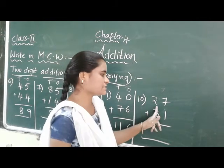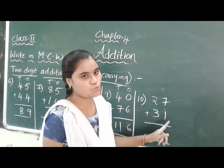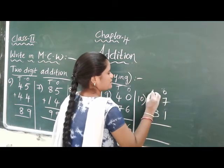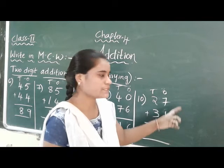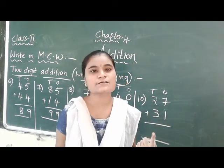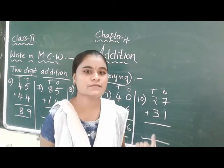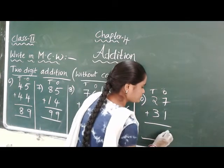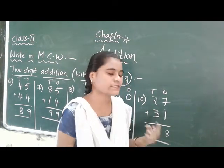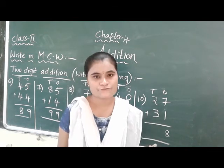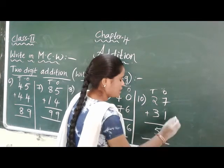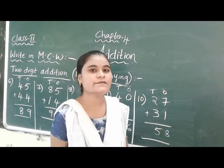Next: 27 plus 31. Ones place: 7 in the mind, take 1 finger, 7 after 8. Tens place: 2 in the mind, take 3 fingers, 2 after 3, 4, 5. Answer is 58.